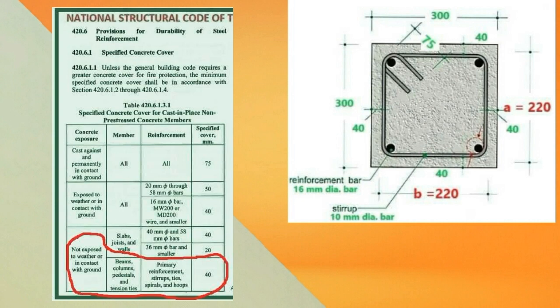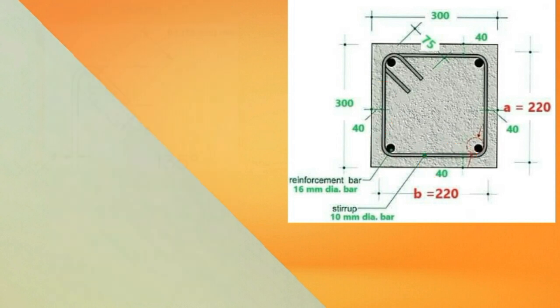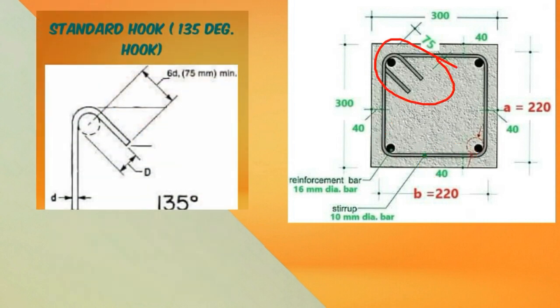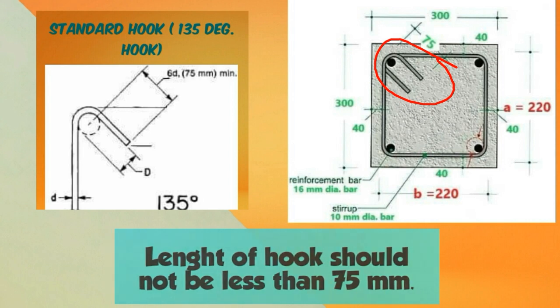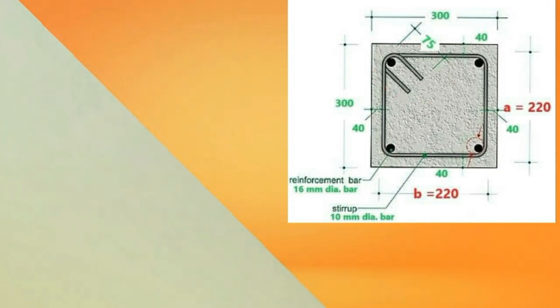The ACI code and the National Structural Code of the Philippines also specifies that for beams, columns, pedestals, and tension ties not exposed to weather and not in contact with the ground, the specified concrete cover for primary reinforcements, stirrups, ties, spirals, and hoops is 40 millimeter. The length of hook for a 135 degree hook is 6d, or 6 times the diameter of the bar, but the code further specifies that the hook length should not be less than 75 millimeter.